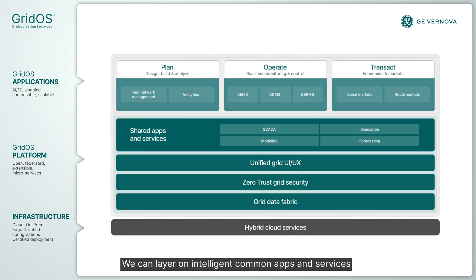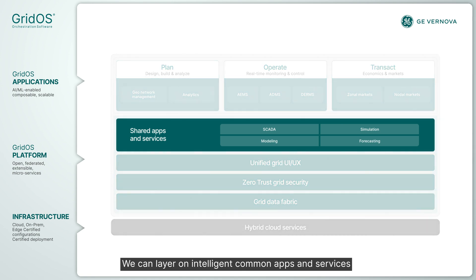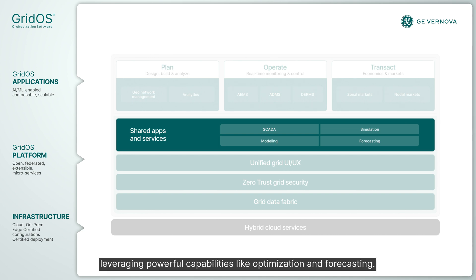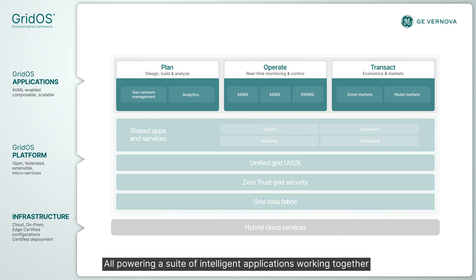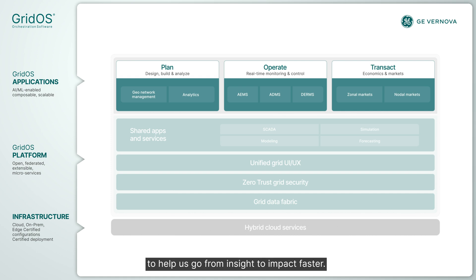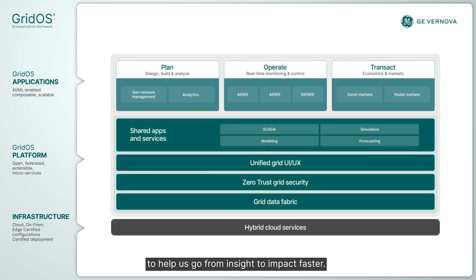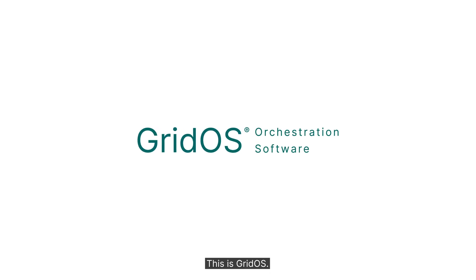We can layer on intelligent common apps and services that let us scale horizontally to meet demand, leveraging powerful capabilities like optimization and forecasting. All powering a suite of intelligent applications working together in real-time to look ahead prescriptively and autonomously, to help us go from insight to impact faster. This is Grid OS.